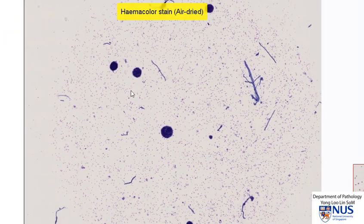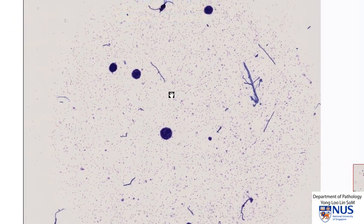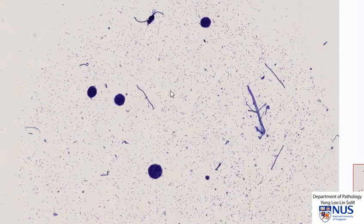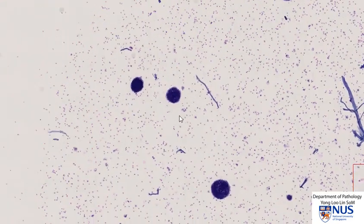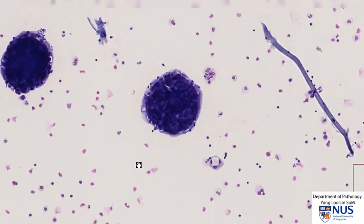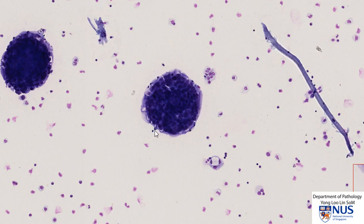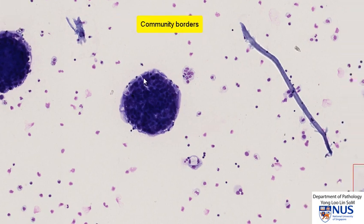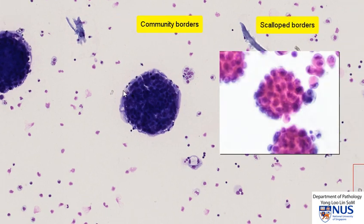At low power, we can pick up these very round cell balls or cell clusters. As we move on to higher power, we can note that the borders of these cell clusters are very, very smooth. This is known as community borders, and this is opposed to scalloped borders, where you can see individual cells poking out in a scalloped kind of outline.